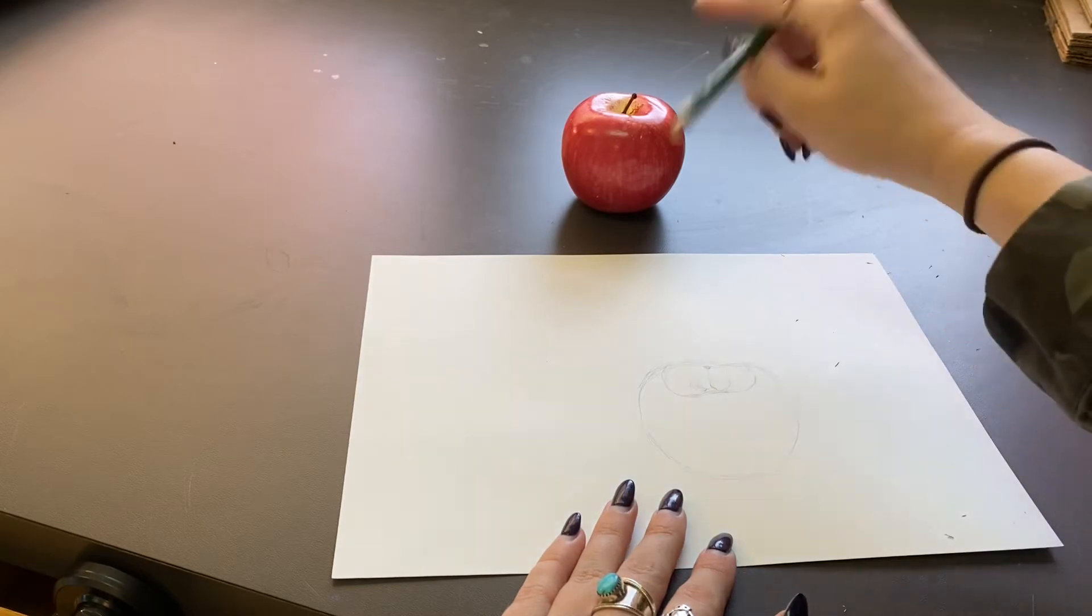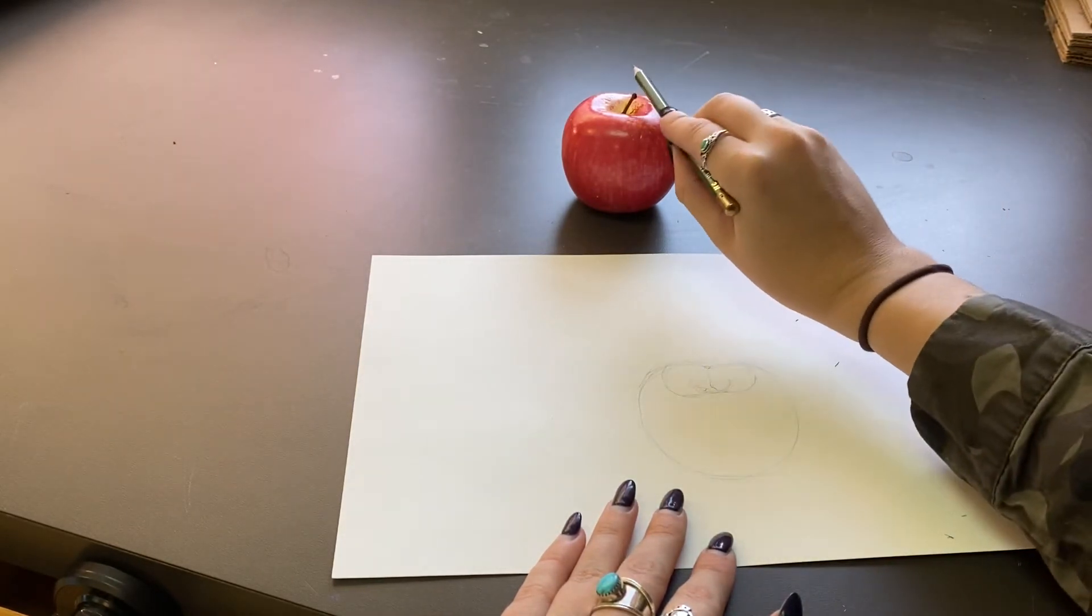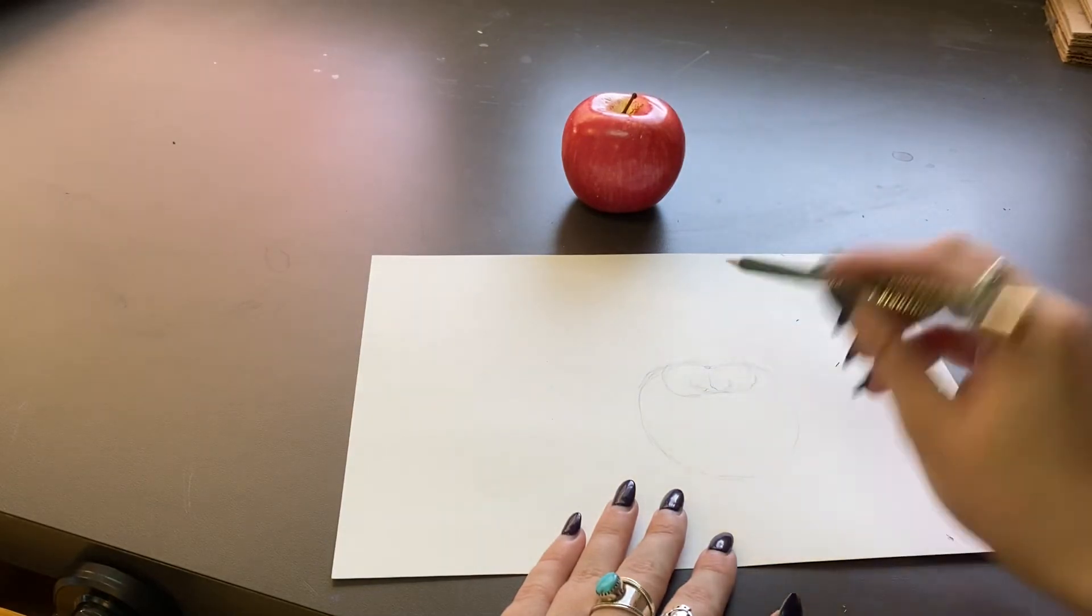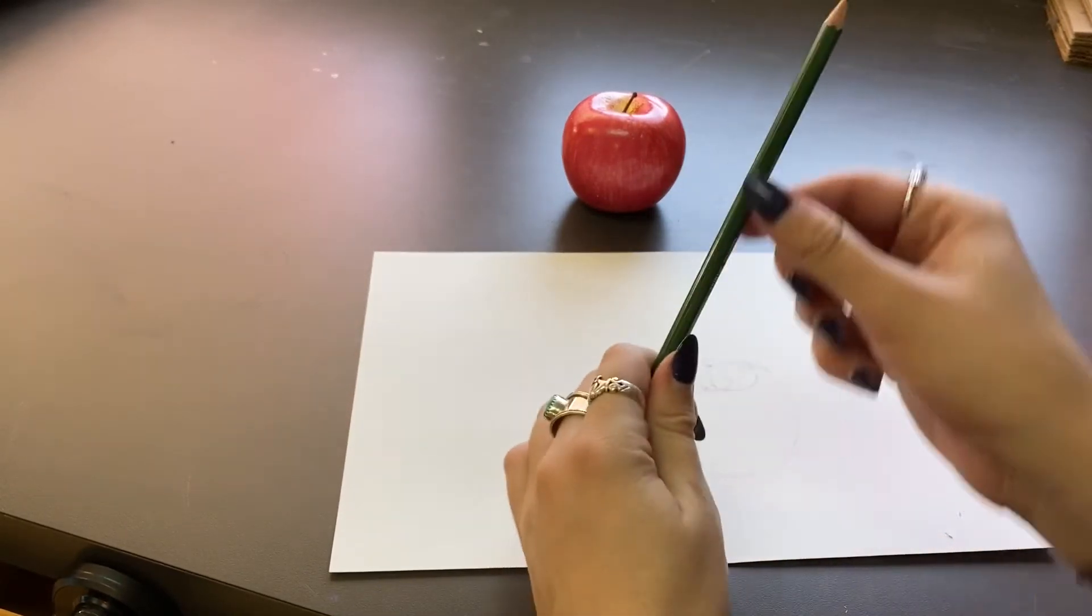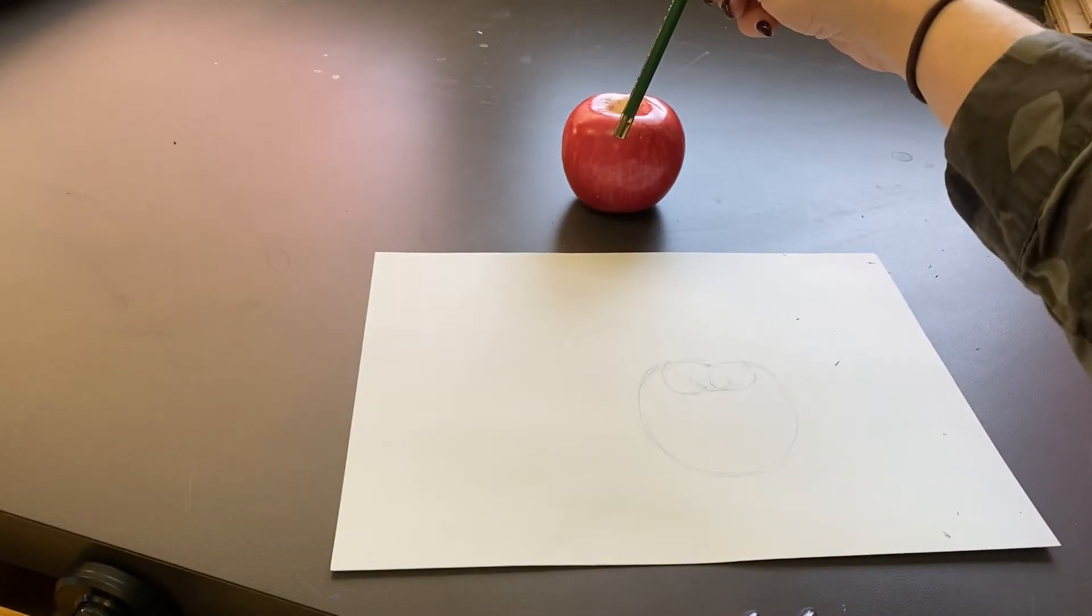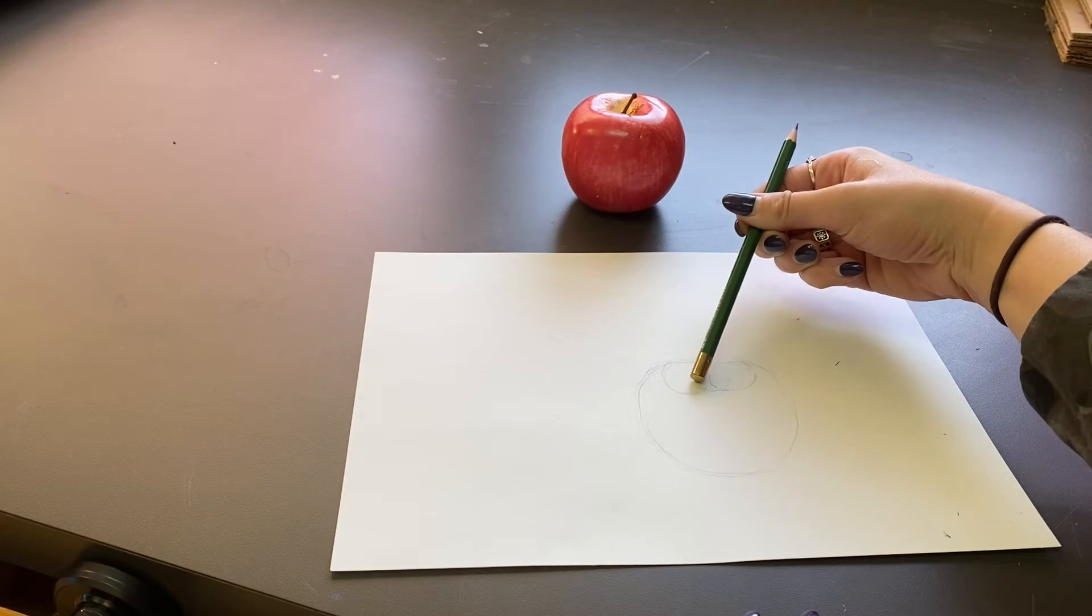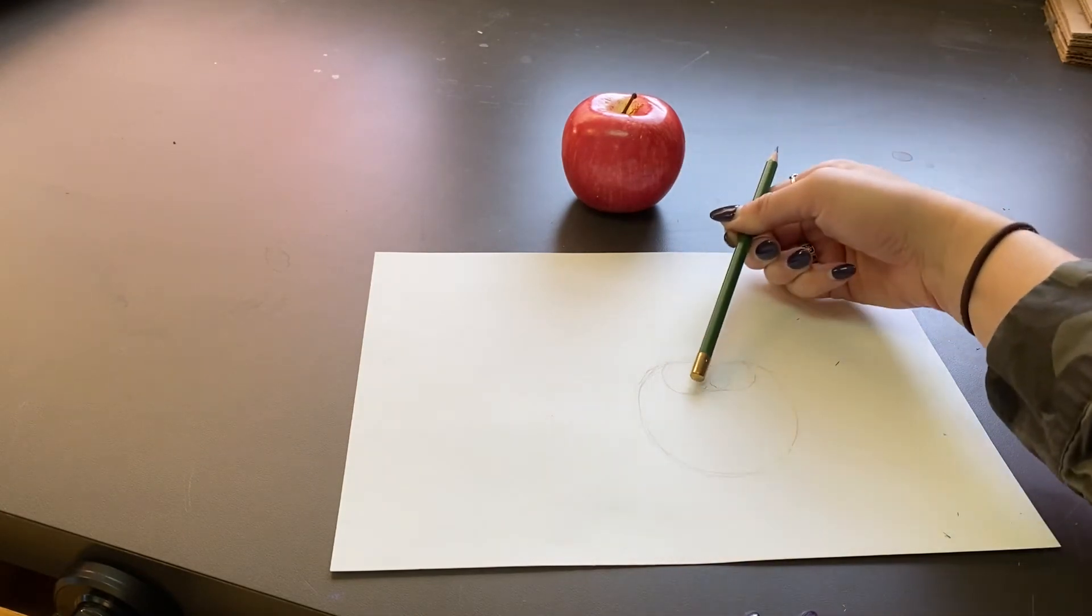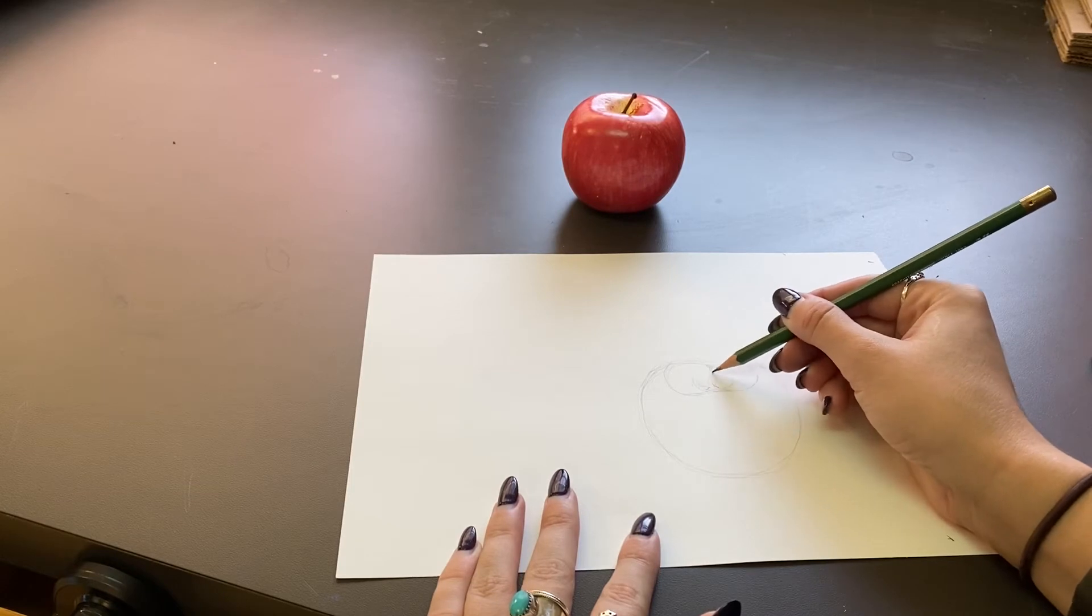Another tip I have is you can use your pencil or your finger and it's kind of like a ruler. So I'm looking at the object. I line up my pencil to match whatever I'm trying to draw and then I bring that to my paper. It's helping me measure the angles and the size of whatever I'm trying to draw.